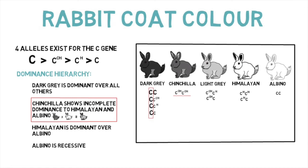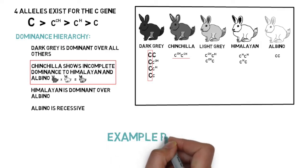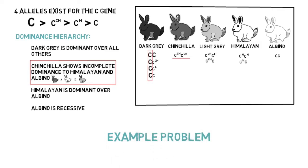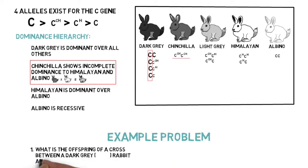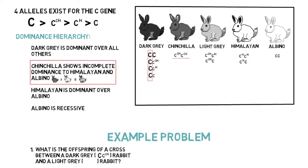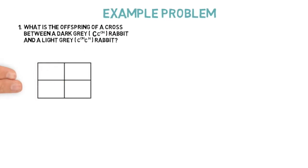Now that we have an understanding of multiple alleles, and specifically multiple alleles in relation to rabbit color, we can solve an example problem. What is the offspring of a cross between a dark gray rabbit and a light gray rabbit? The dark gray rabbit's genotype is capital C lowercase cch, and the light gray rabbit's genotype is lowercase cch lowercase ch. Complete the cross and determine the genotypic and phenotypic ratios.